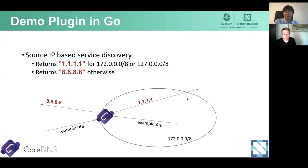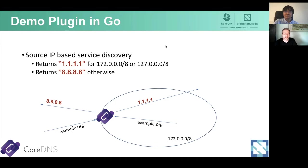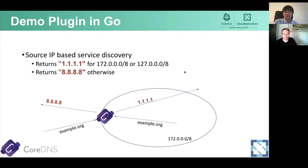We're going to look at a small plugin — the demo plugin. Depending on the client's source address, it will reply with IP 1.1.1.1 or IP 8.8.8.8. So it makes a small decision and then writes back the reply to the client. We're going to see how to set this up in CoreDNS and how it all works from code to actually running it.